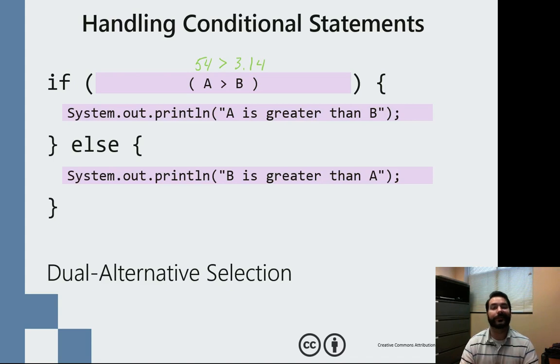And since 54 is greater than 3.14, what do you know? We're going to be evaluating this out as true. And so this gets executed and again, Java completely ignores the else block.